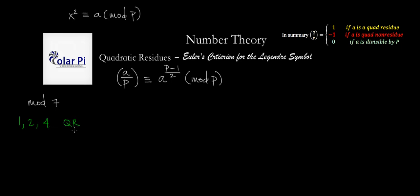We said that the numbers 1, 2, and 4 were quadratic residues, and then we said that the numbers 3, 5, and 6 were quadratic non-residues.